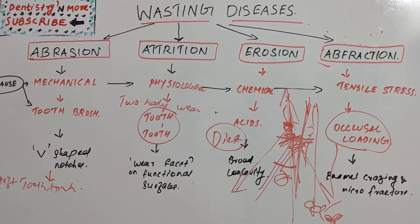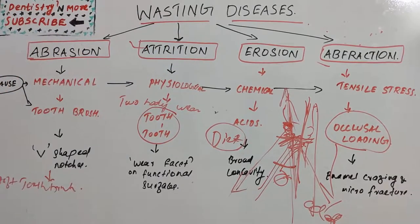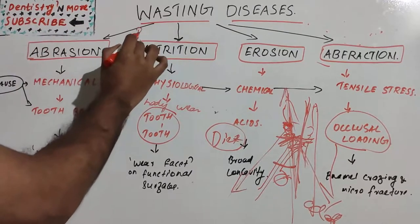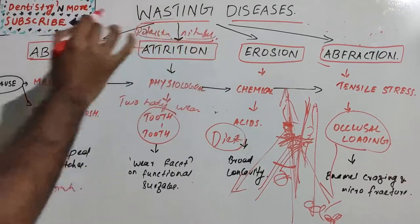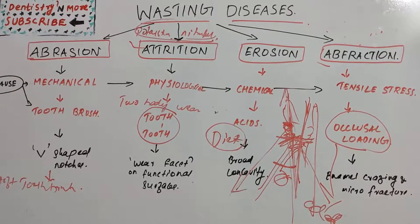For attrition, since minimal wear always occurs physiologically, desensitizing agents such as topical fluoride varnishes or sensitive toothpastes can be used. Products containing potassium nitrate or strontium nitrate seal the dentinal tubules. Composite restorations, orthodontic treatment, crown lengthening procedures, or protective splints are also treatment options.